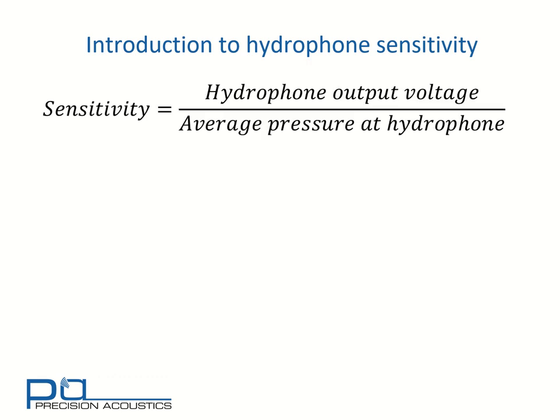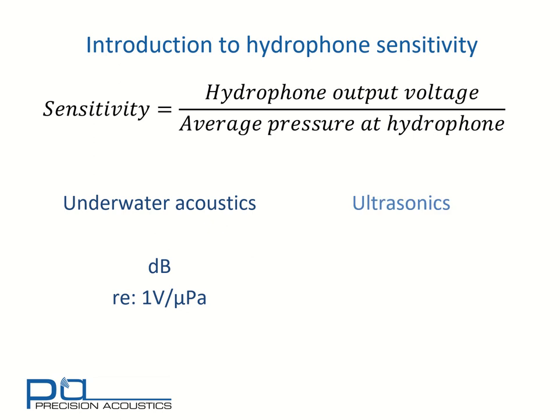Sensitivity is simply the hydrophone's output voltage divided by the average pressure at the hydrophone active element. In underwater acoustics, it's common to use logarithmic units, in which case decibels relative to 1 volt per micropascal are commonly used. In ultrasonics, linear units are more commonly used, in which case we consider millivolts per megapascal or nanovolts per pascal appropriate for representing sensitivity.